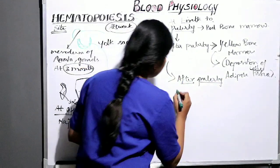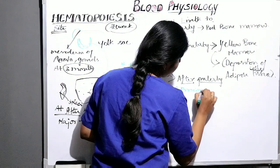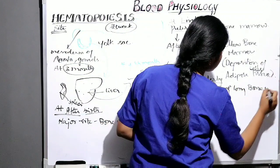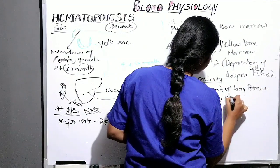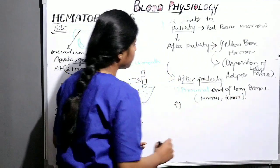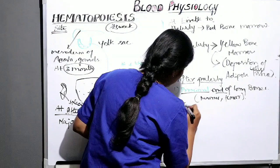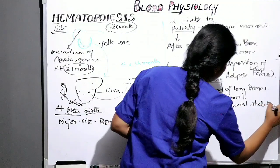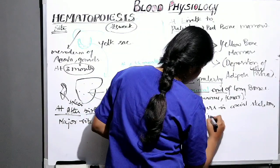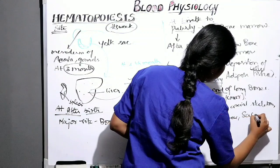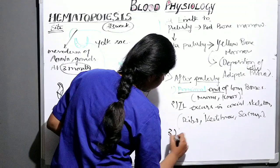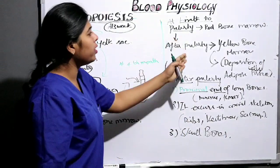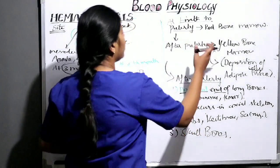After puberty, hematopoiesis occurs in the proximal end of long bones — that is, the humerus and femur — and in the axial skeleton, like the ribs, vertebrae, and sacrum. It also occurs in the skull bones. All remaining red bone marrow is capable of hematopoiesis.